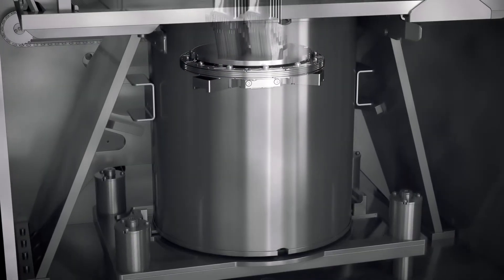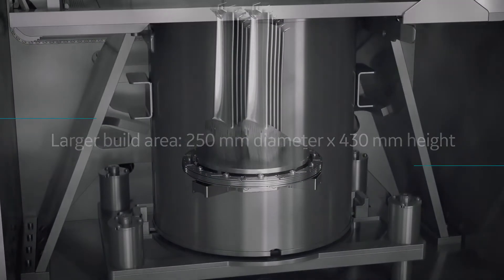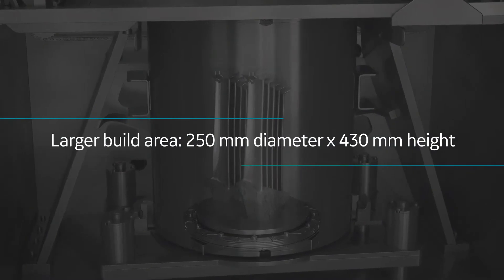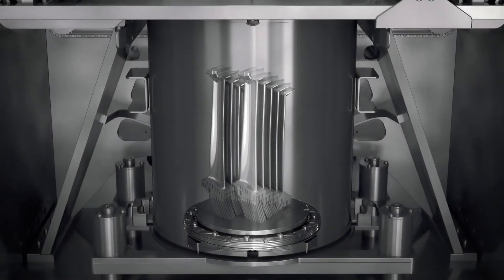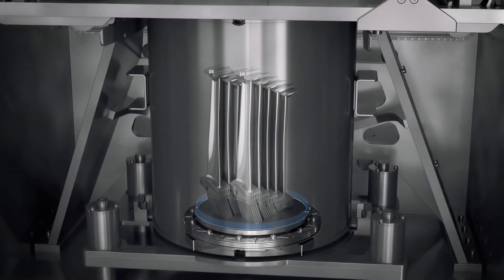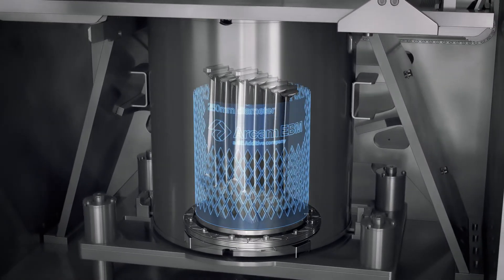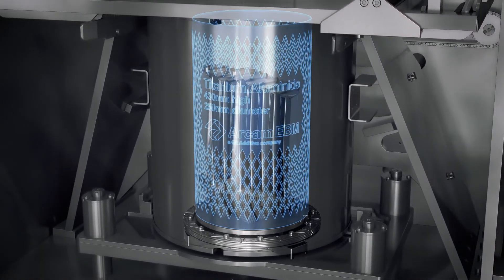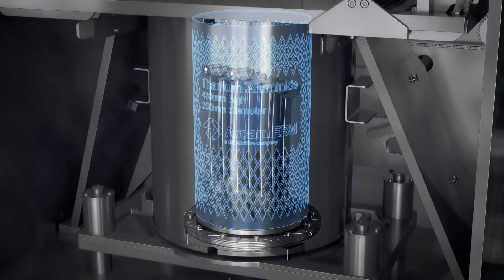Boosting production capacity also comes from Spectra H's expanded build volume, 39% larger than the previous-generation EBM machine. With this extended platform, it's possible to print larger parts than ever before and produce more parts at one time.